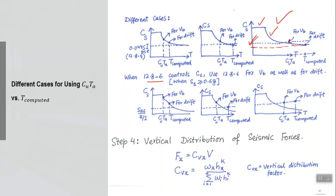The Cs used for calculating base shear and the Cs used for calculating drifts will be different. In some cases the lower limit criterion applies when calculating forces but not when calculating drifts. Please keep all those things in mind. The ultimate practical result is that forces may come from one computer model and drifts from a different computer model with a different T value and a different Cs value.